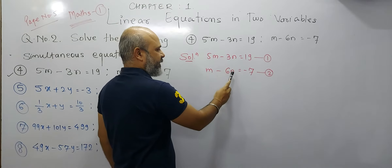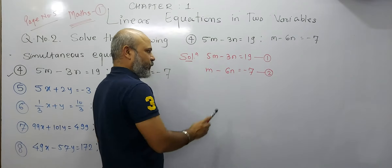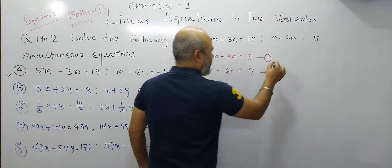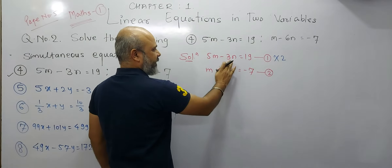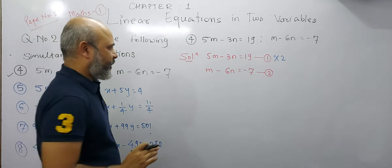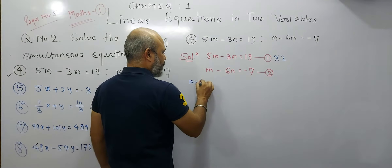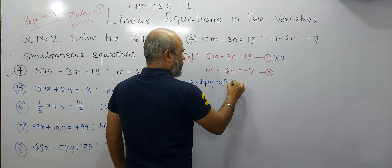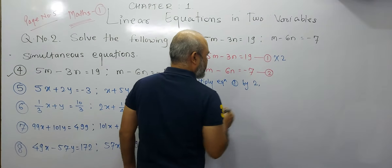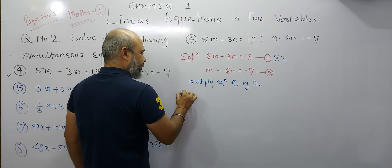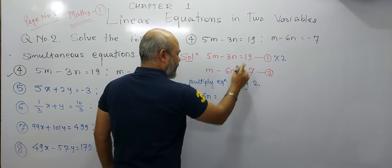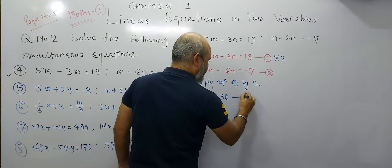In equation number 1, the coefficient of n is minus 3, and in equation number 2, the coefficient of n is minus 6. So if we multiply equation 1 by 2, we will get 6n here, and both coefficients will now be the same. So we multiply equation 1 by 2. Multiplying gives us 10m minus 6n equals 38. This will be equation number 3.